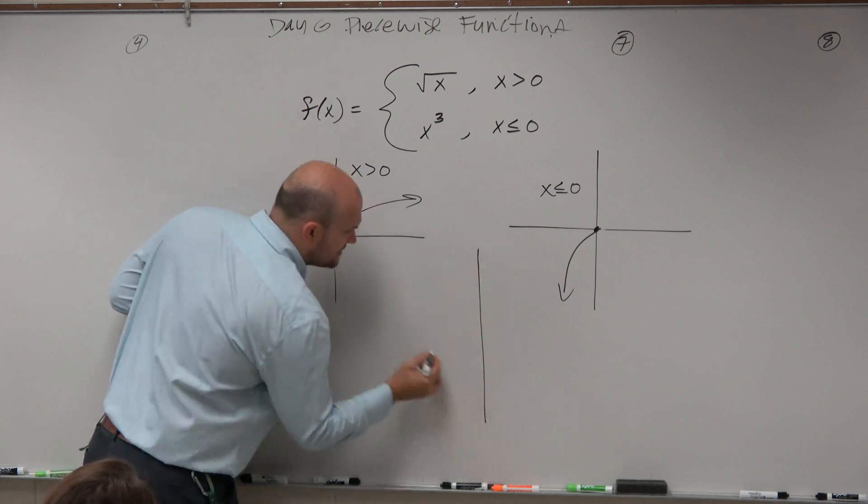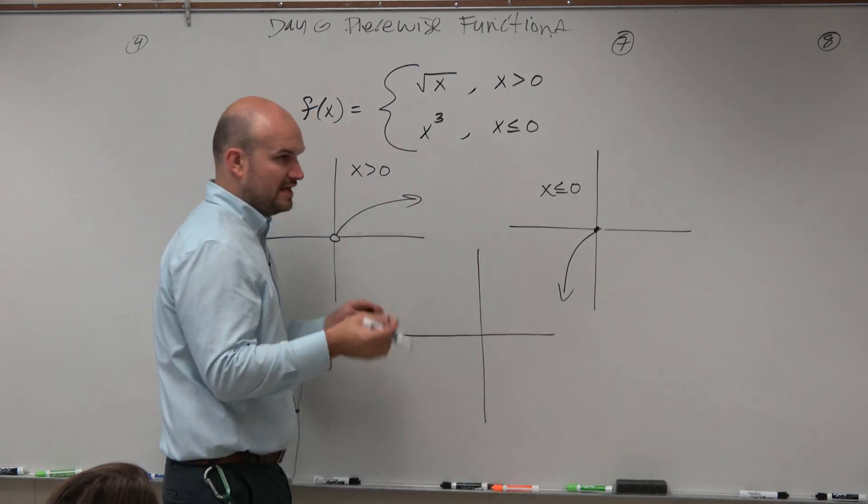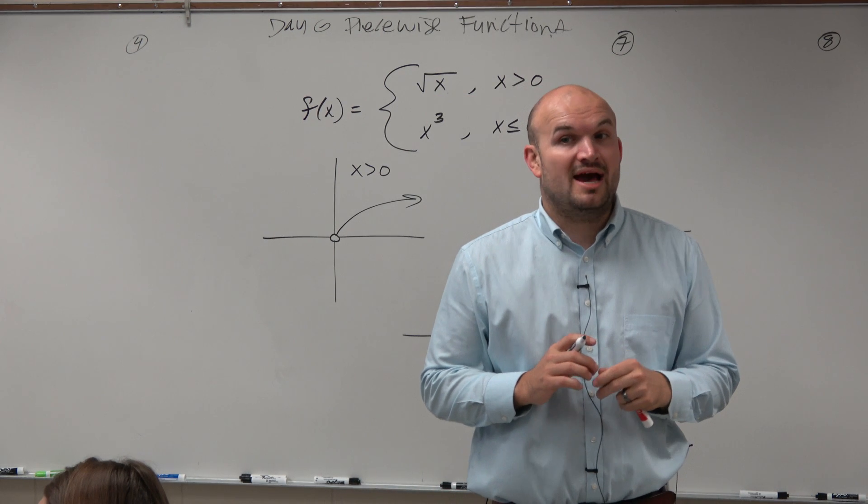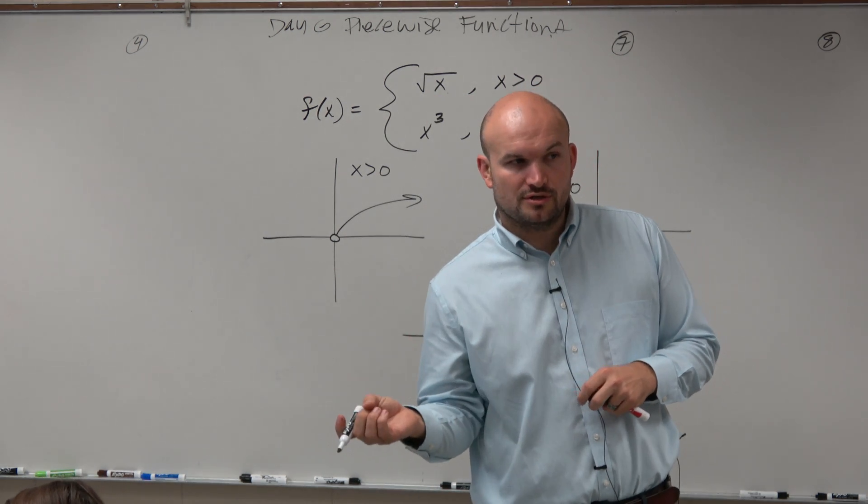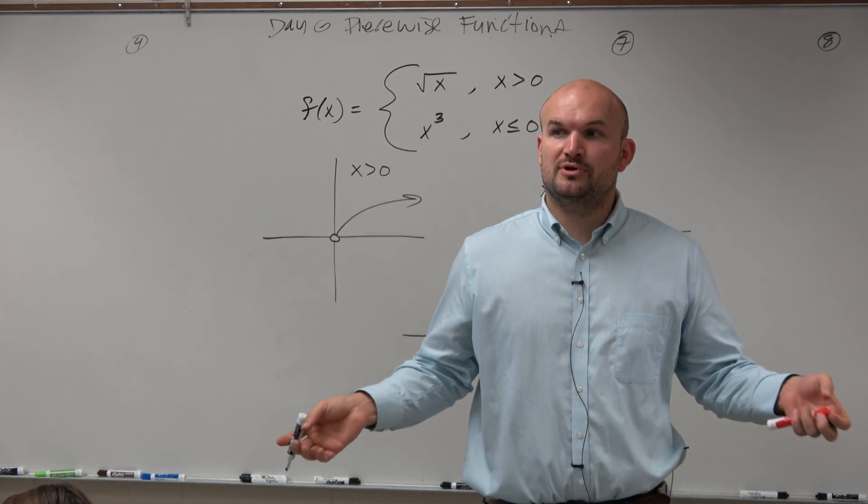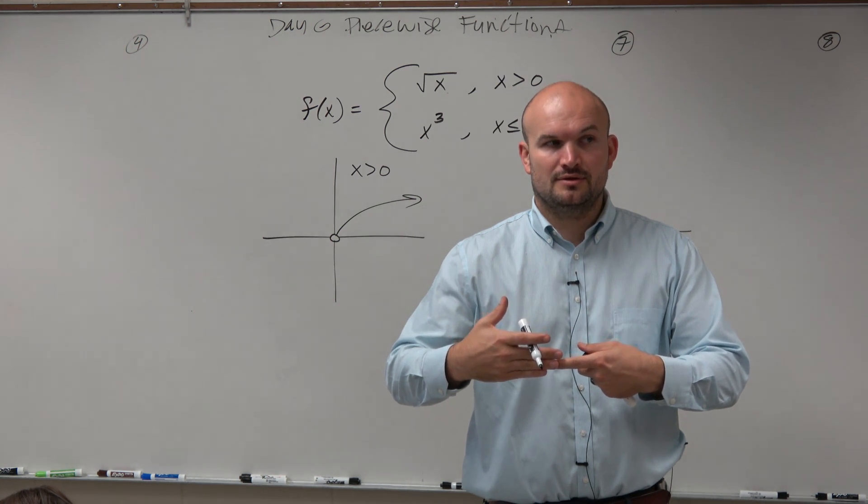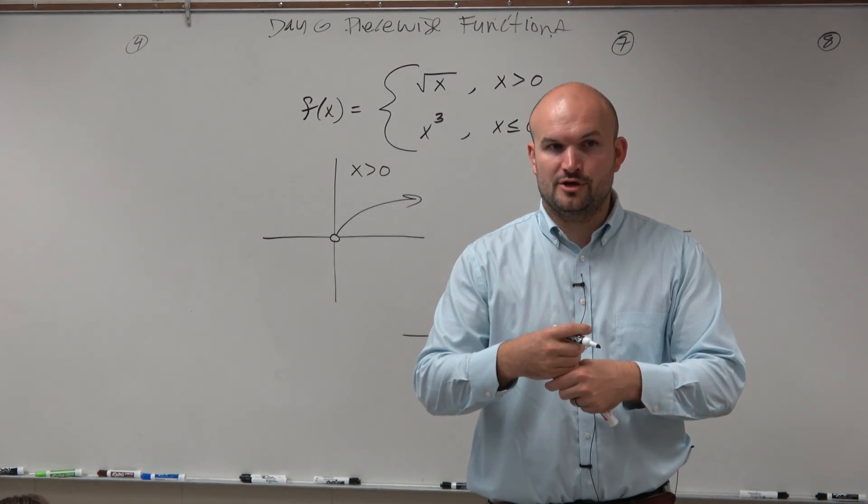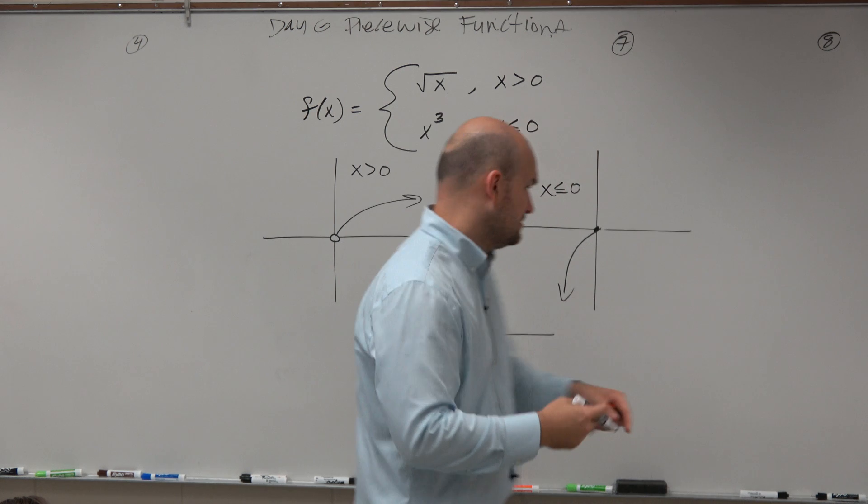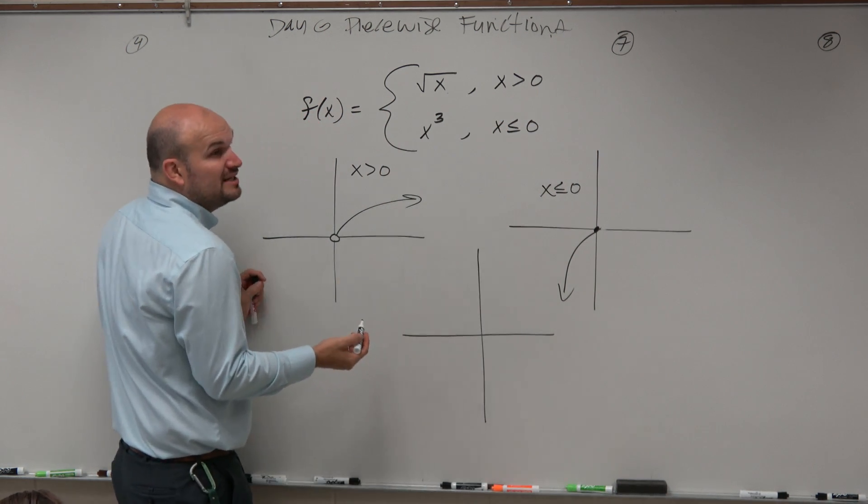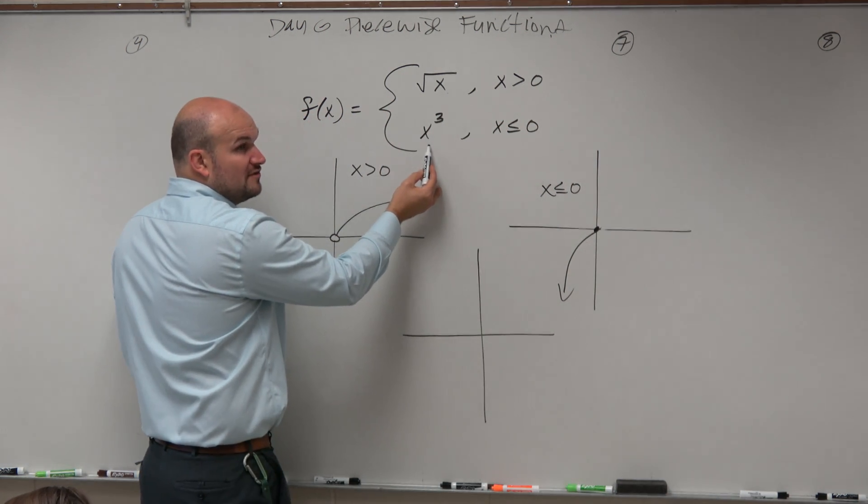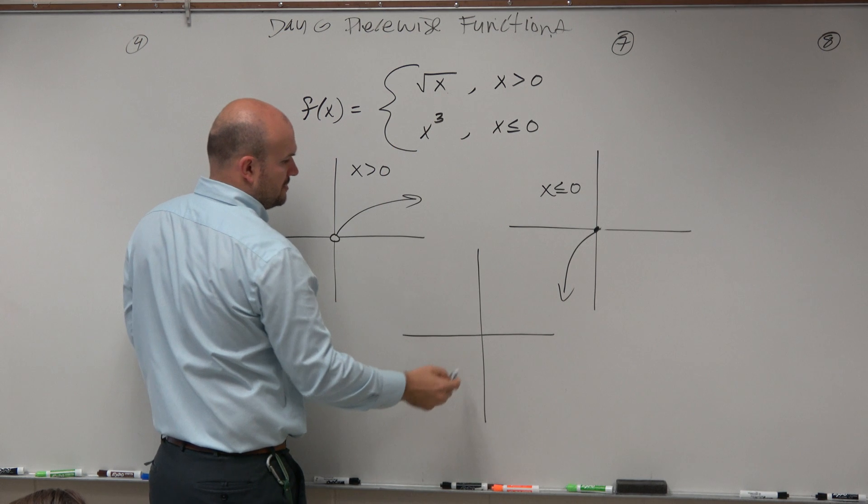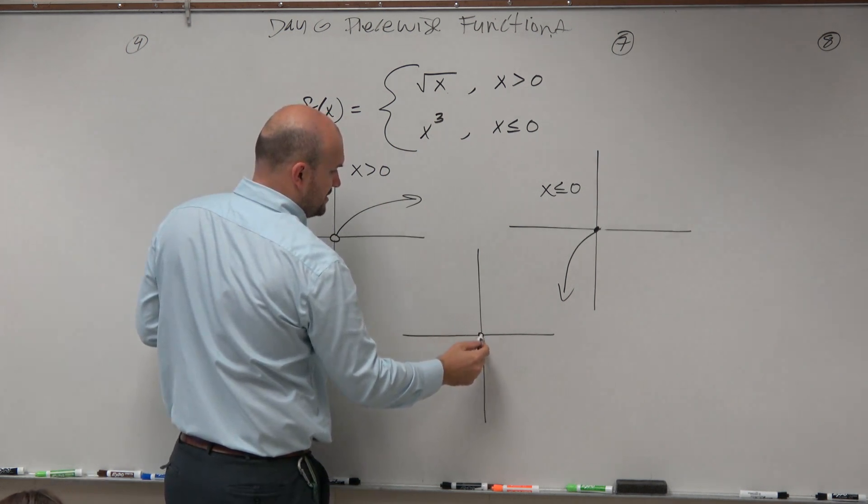So now we're just going to combine the two graphs together. Now, think about this as well. If you have a closed circle and you have an open circle and you put the two graphs on top of each other, does the closed circle fill in the open circle? Yes. So now 0 is going to be defined. It's just going to be defined for this function, not that one. So the graph looks something like this.